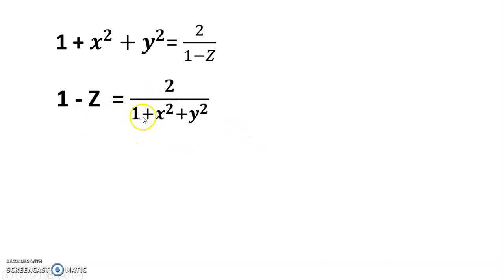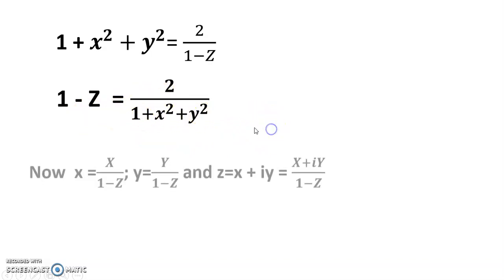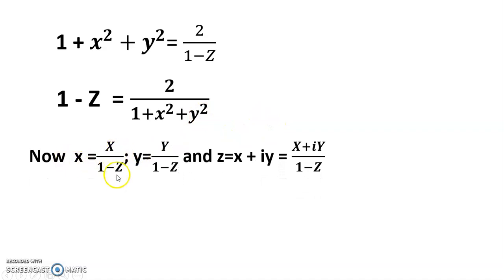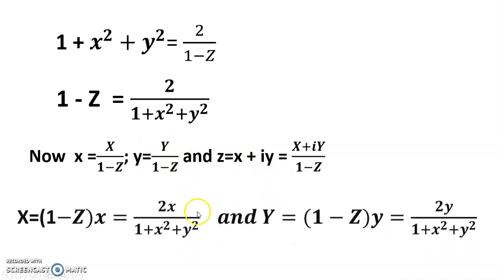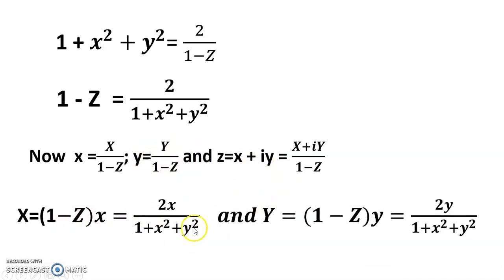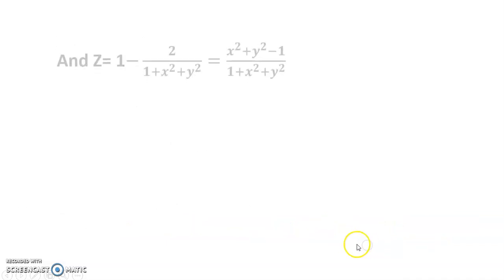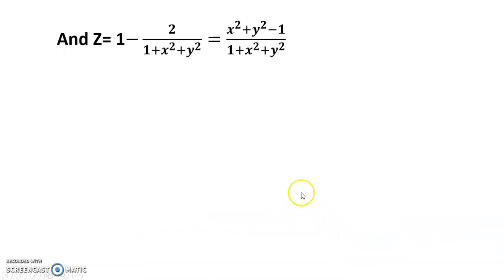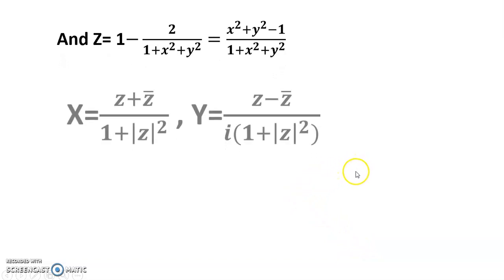Thus 1 − z = 2/(1 + X² + Y²), X = x/(1−z), and Y = y/(1−z). Solving for z gives z = 1 − 2/(X² + Y² + 1), which simplifies to z = (X² + Y² − 1)/(X² + Y² + 1).